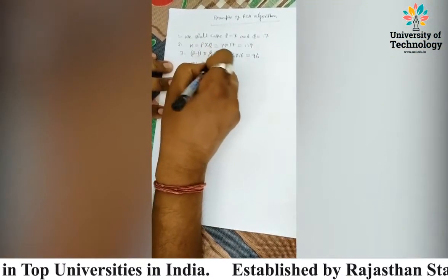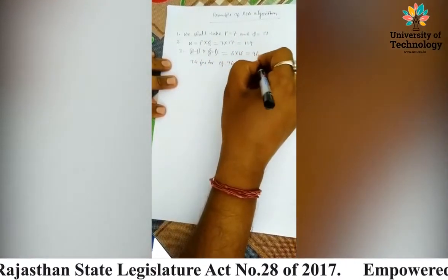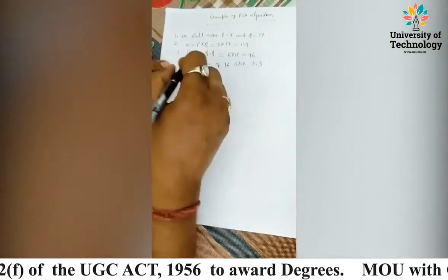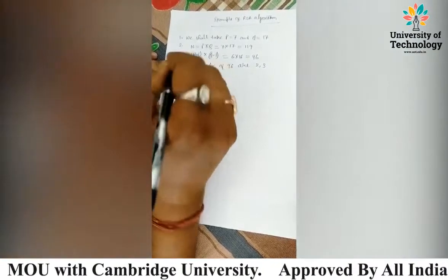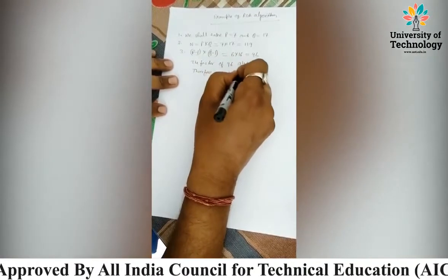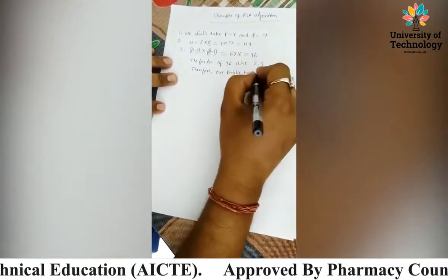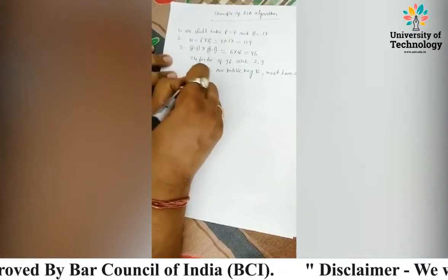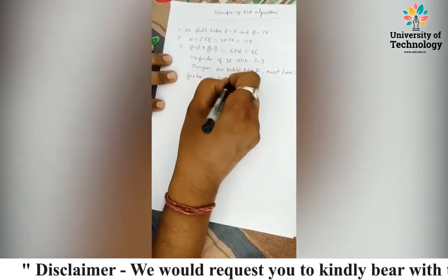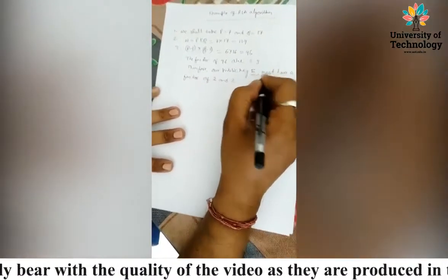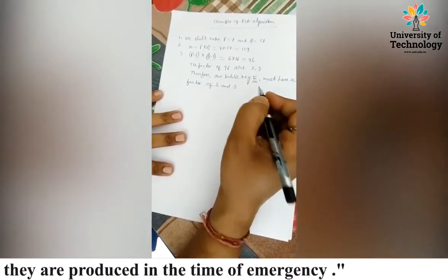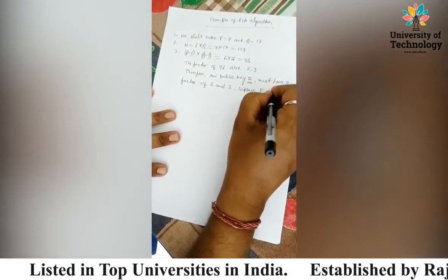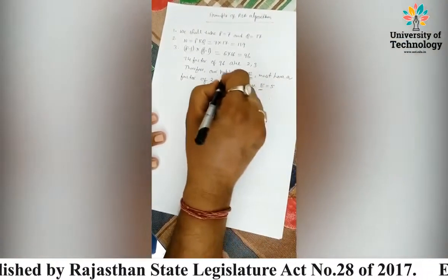Now the factors of 96 are 2 and 3. Therefore, our public key E must not have a factor of 2 and 3 — as I told you in the steps. Now suppose we assume E equals to 5. Let us choose the public key; E equals 5 is your public key.